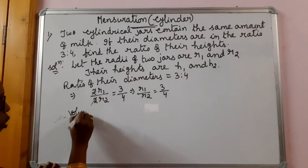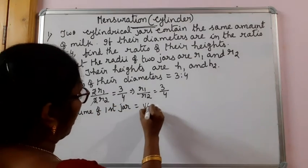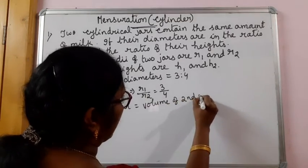Let me write, volume of first jar is equal to volume of second jar. Both are of cylindrical shape.